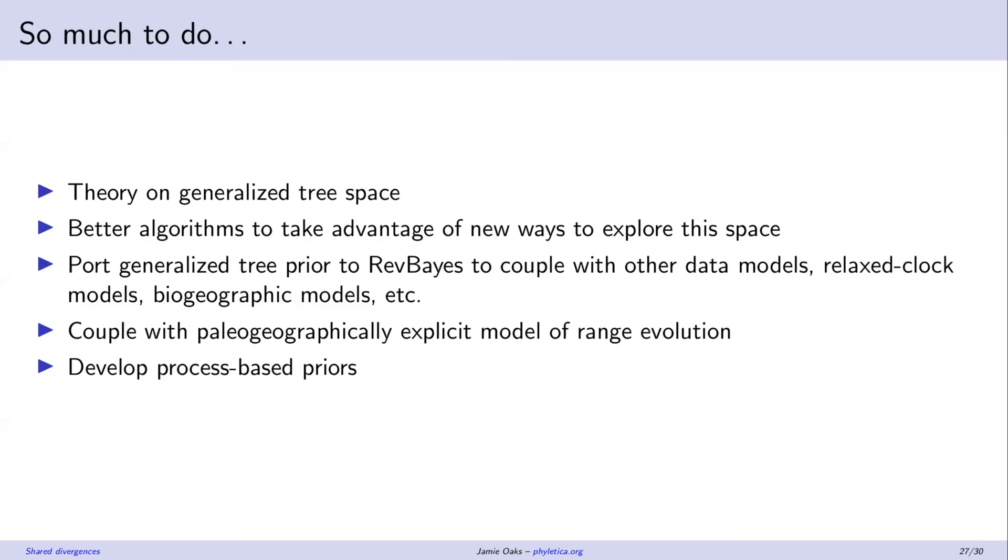There's plenty of theory and algorithm work to do. This needs to be ported to better software where there's other likelihood models that this new distribution can be coupled with, especially paleogeographically explicit range evolution models. That would be really cool to couple this with because then we could actually look at the range evolution on these shared divergences and see if they make geological sense. And really process-based priors on that tree space would be a really good thing to do as well. So we can actually learn about macroevolution during the inference.